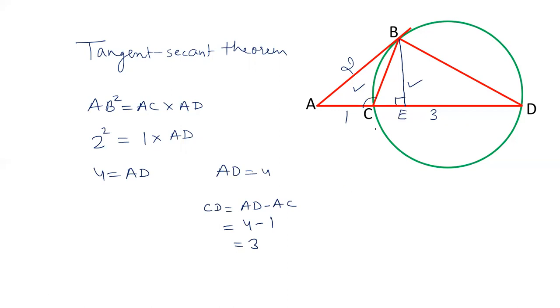As this is an obtuse angle triangle, the perpendicular will be outside the triangle. So area of triangle ABC equals half AC times BE.